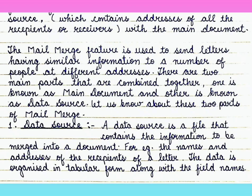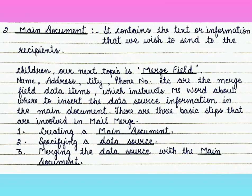There are two main parts that are combined together. One is known as the main document and the other is known as the data source. Number 1: Data Source. A data source is a file that contains the information to be merged into a document — for example, the names and addresses of the recipients of a letter. The data is organized in tabular form along with the field names. Number 2: Main Document. It contains the text or information that we wish to send to the recipients.